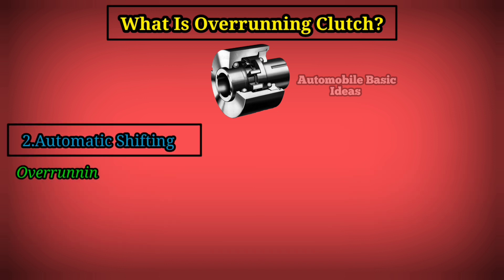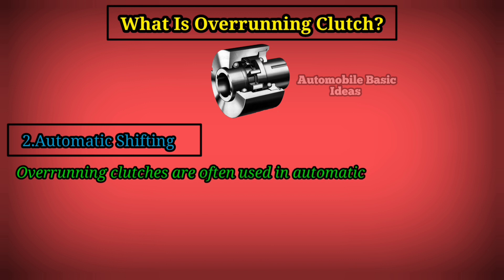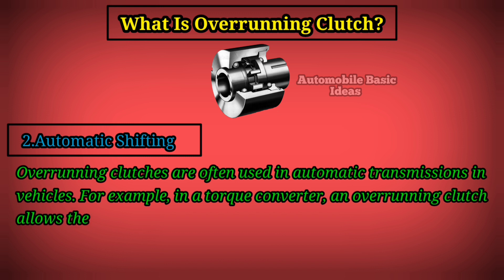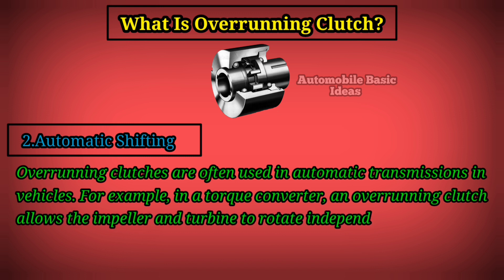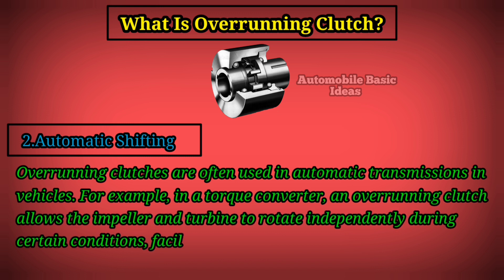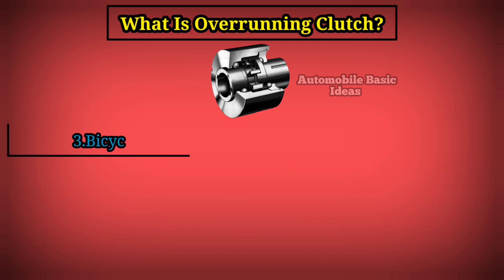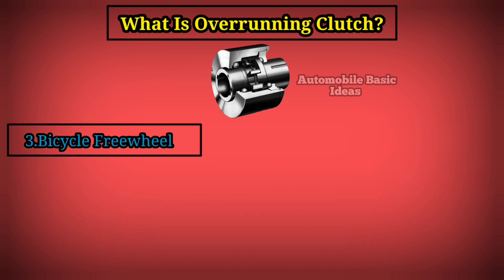Two, automatic shifting. Overrunning clutches are often used in automatic transmissions in vehicles. For example, in a torque converter, an overrunning clutch allows the impeller and turbine to rotate independently during certain conditions, facilitating smooth automatic shifting.